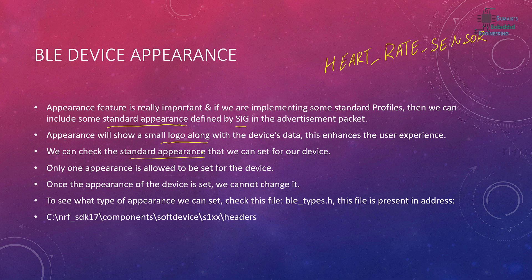There is a complete list of standard appearances which you can check on the Bluetooth official website. Only one appearance is allowed to be set per device. For example, if you set your device as a heart rate sensor, you can't change it to another appearance — once set, it never changes. To see what appearances are available, we check the file ble_types.h, which contains all standard appearances. If our appearance doesn't match any standard, the device will default to unknown appearance.